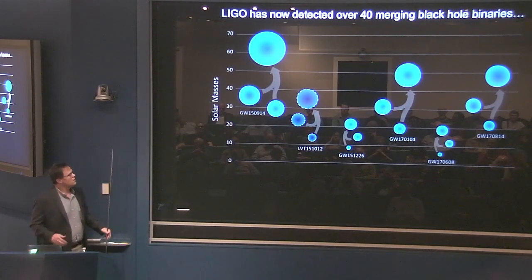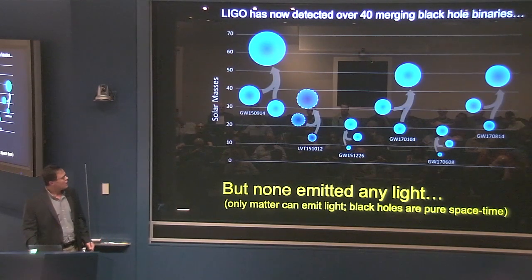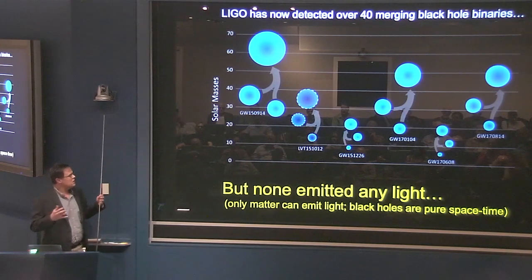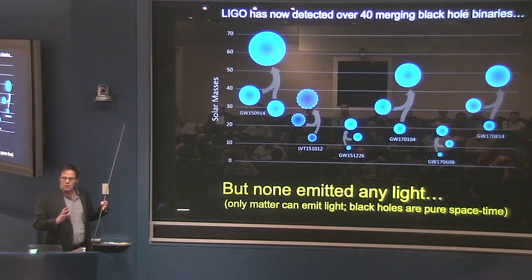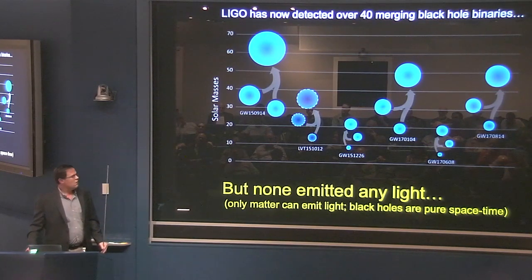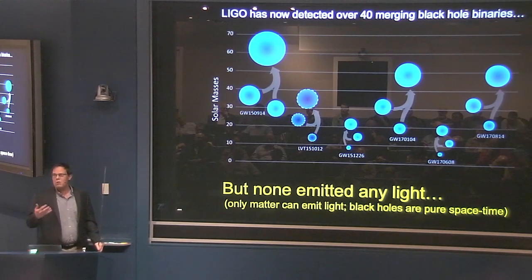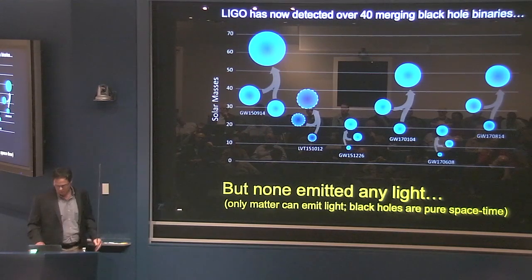But what I want to say with this slide is not that we're detecting a lot of black holes, but to our knowledge, as of yet, none of these have emitted any light. We've tried to point telescopes at these a few times, but we haven't seen any bright light coming out after them. And in some sense, this is not unexpected. If you don't have any other material around the black holes when they're merging, only matter can emit—couples electromagnetically. In some sense, black holes are pure space-time. So it's not so surprising. Even though we've detected many black holes, we haven't seen any light from them.